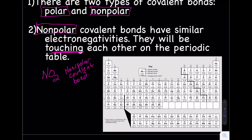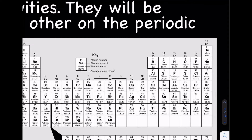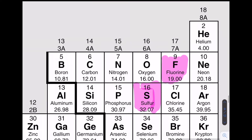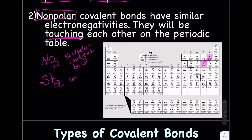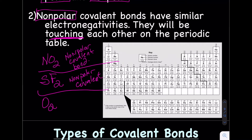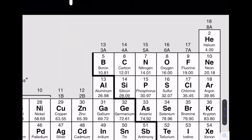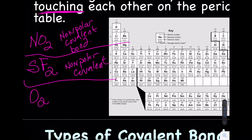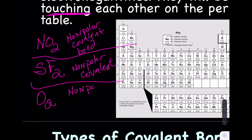How about sulfur connected to two fluorines — SF2? Sulfur is here and fluorine is here — they're touching a little bit, so yes, this would also be non-polar covalent. And if we just had O2 — two oxygens connected together — oxygen is definitely touching oxygen, so that would also be non-polar covalent. So for us, non-polar covalent bonds will contain atoms that are touching each other on the periodic table.